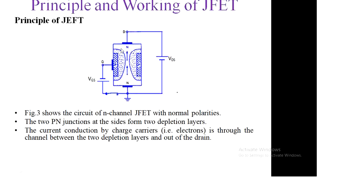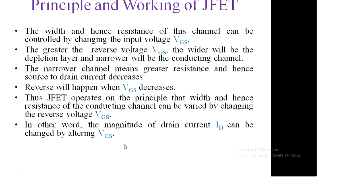While examining the working principle of JFET, different cases are considered. The width and hence the resistance of the channel can be controlled by changing the input voltage VGS. When VGS is increased in the negative direction, the width of the channel decreases. The greater the reverse voltage VGS, the wider the depletion layer and the narrower the conducting channel. A narrower channel means greater resistance and hence the source-to-drain current decreases.